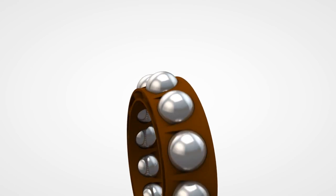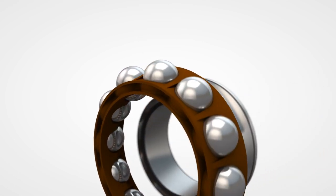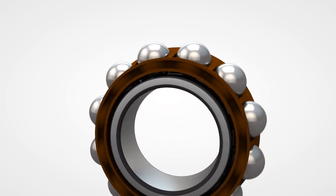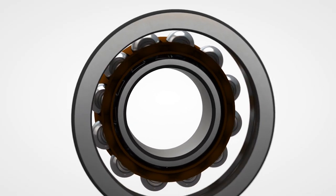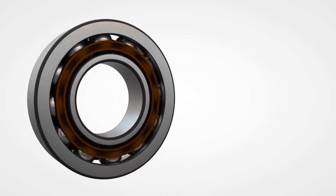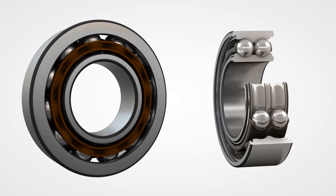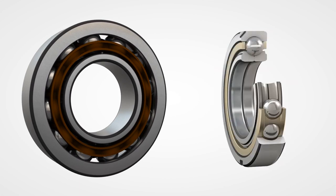The raceways are ground with a 40 degree contact angle which means they can carry large axial loads. Other bearings in this family are the double row angular contact bearing which is always arranged in a back-to-back configuration and the four-point bearing which can only be used for axial loads.